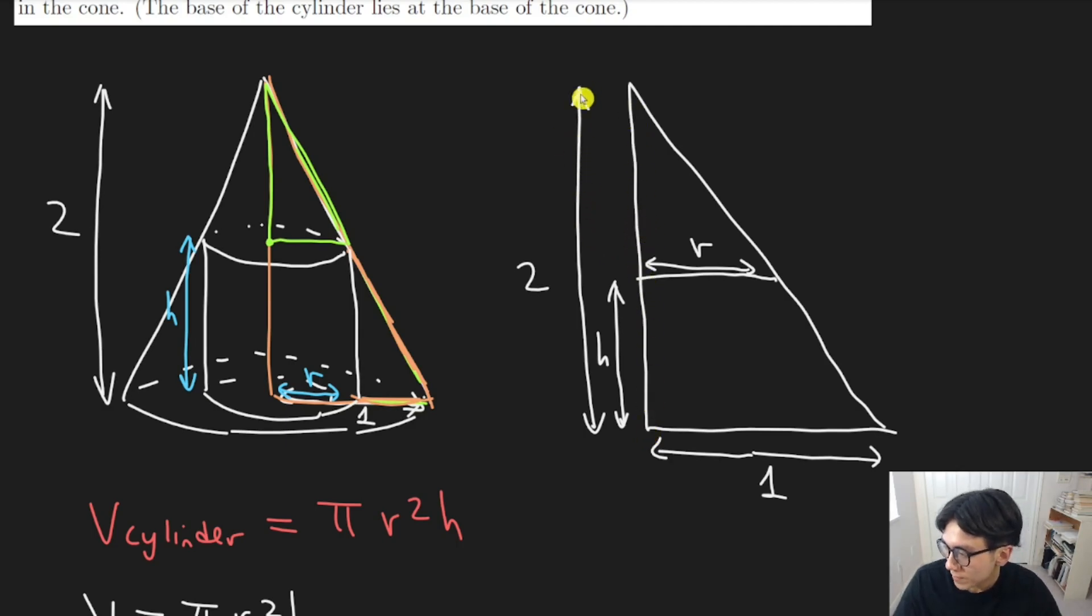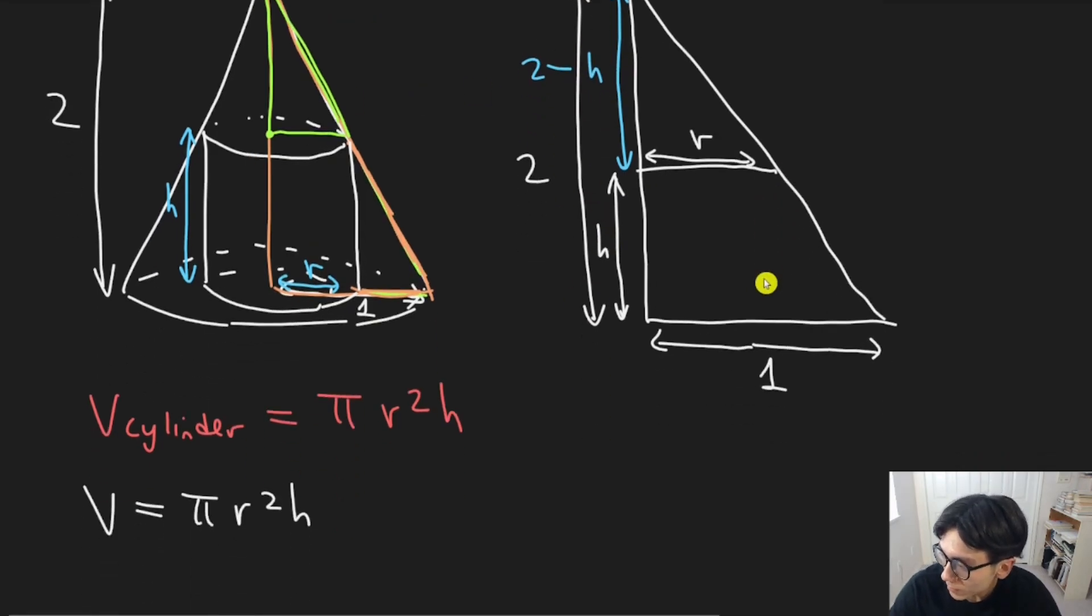Well, if this entire thing is two, and this is h, then the leftover part here must be two minus h. So similar triangles says we can say two divided by two minus h is the same as the big base divided by the small base. So for example, one over r. And this is our relationship.